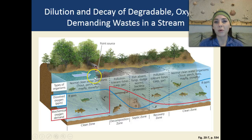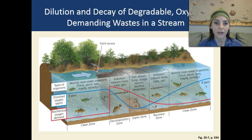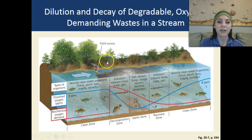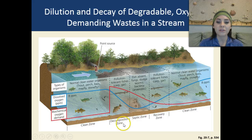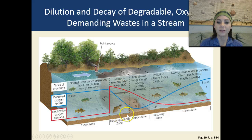Then we have our point source, which is our source of pollution — say from a wastewater treatment plant or sewage. This is our point source, the decomposition zone. Pollution-tolerant fishes such as carp and gar can be found here.